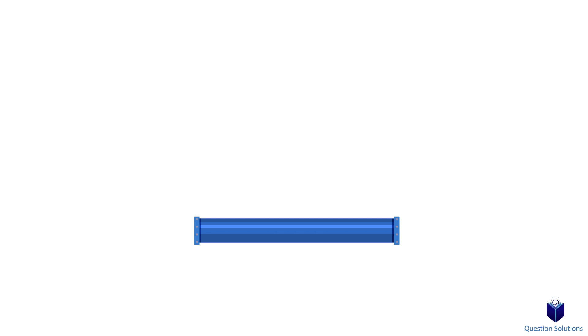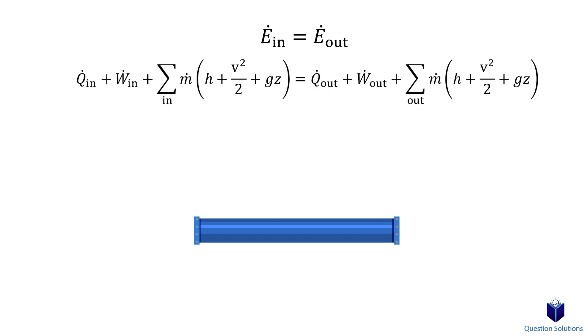Since they can be considered steady flow devices, we know that the rate of energy in must equal the rate of energy out. If we expand this equation to cover all the types of energy associated with steady flow systems, it looks like this. We can simplify this equation depending on the purpose of the pipe or duct.